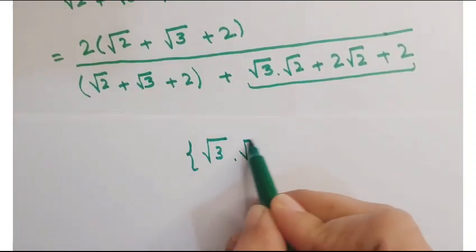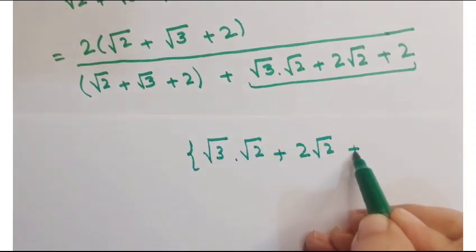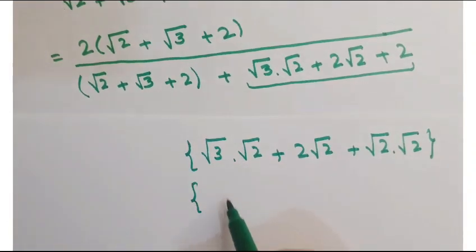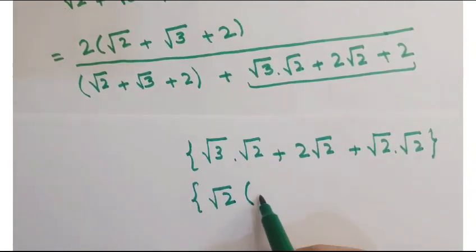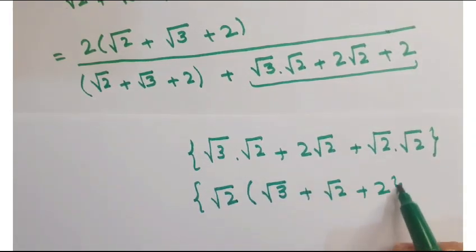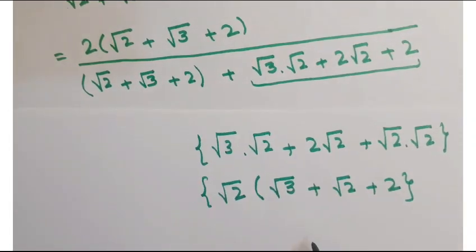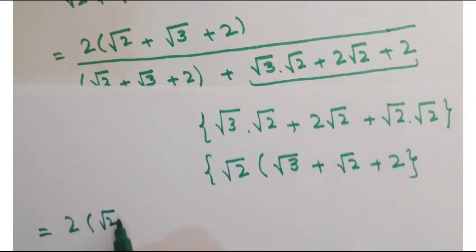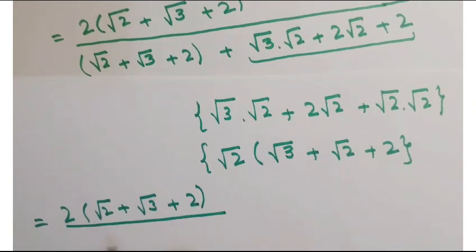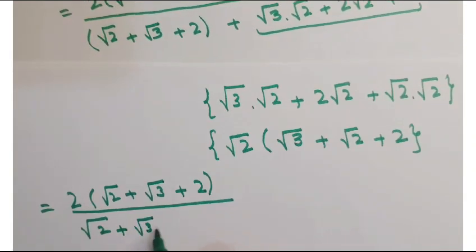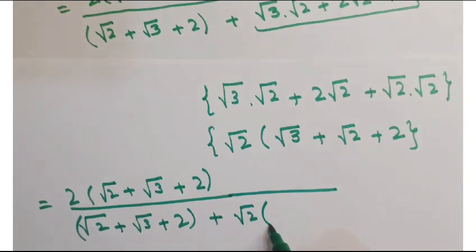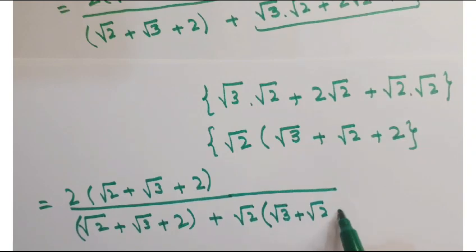Working on the denominator: √3·(√2) + 2√2. Split the 2 as √2 × √2, then taking out √2 common from these three terms, you get √2(√3 + 2). So you can replace the denominator grouping as (√2 + √3 + 2) upon (√2 + √3 + 2) + √2·(√3 + √2 + 2).